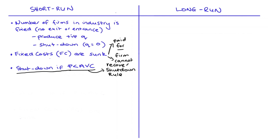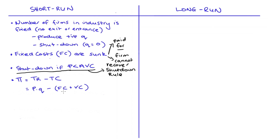To see why this is the case, we can look at our profit function. Profit is total revenue (TR) minus total cost (TC). Total revenue is price times quantity (P × Q), and we can break our costs into two components: a fixed cost component (FC) and a variable cost component (VC).